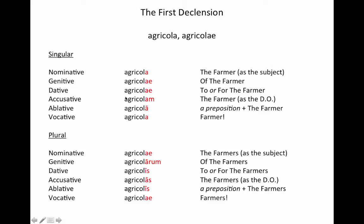If I hit the farmer, that would be him as a direct object, and I would use agricolam. If I walked away from the farmer, he is now the object of a preposition, and I'd use agricola with a macron over the 'a.' And if I said 'hey farmer, how goes it?' I would use agricola, which looks just like the nominative.